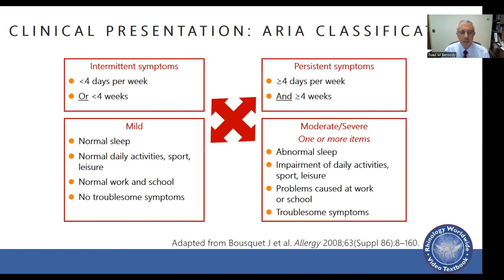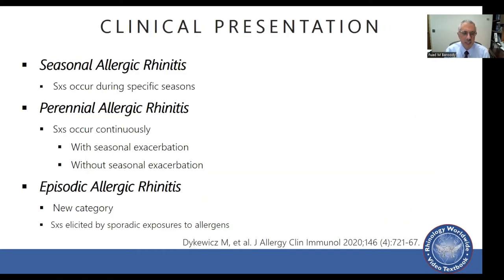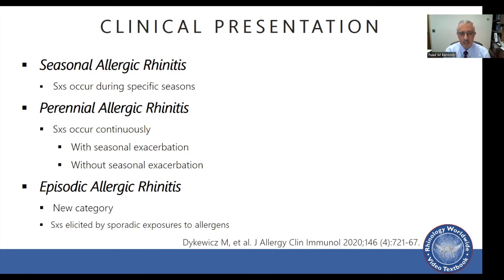The older classification, still adopted by the American Academy of Allergy, Asthma, and Immunology, uses seasonal, perennial — which may have seasonal exacerbations — and episodic allergic rhinitis, where symptoms are elicited by sporadic exposure. A typical example of episodic rhinitis is a patient allergic to pets who doesn't live with pets but develops significant symptoms upon visiting a home with pets. Clinicians can use either classification system.